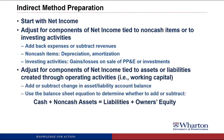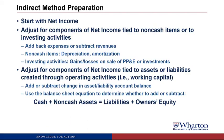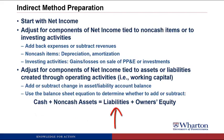Then we need to adjust for components of net income tied to assets or liabilities created through operating activities. These are the working capital accounts like accounts receivable, inventory, and all of the payables. What we need to do is add or subtract the change in the asset or liability account balance, using the balance sheet equation to determine whether we should add or subtract. For example, accounts receivable is a non-cash asset — if it went up, we subtract it on the cash flow statement to stay in balance. Inventory is a non-cash asset — if it went down, we add it. On the other side of the equation, accounts payable is a liability — if it went up, we add it. And if something like interest payable or wages payable went down, we subtract it on the cash flow statement.